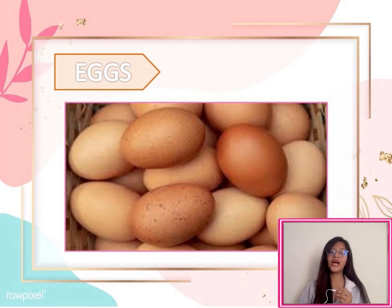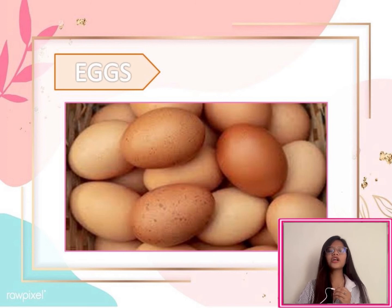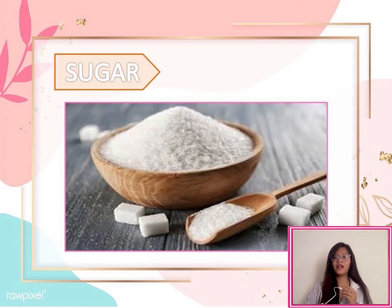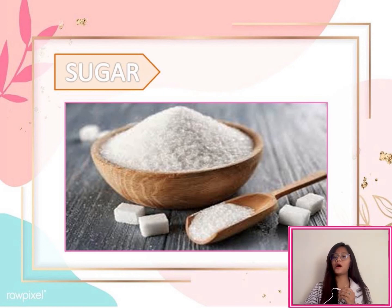Next, we have eggs. To classify as organic, eggs must come from chickens that are fed organic feed. And last, we have sugar. They are organic compounds, as organic compounds are defined as carbon-containing compounds with hydrogen attracted most of the time.